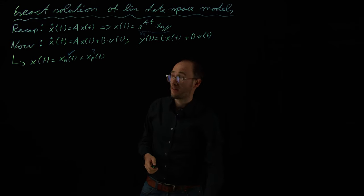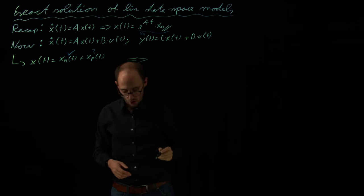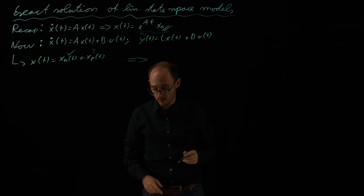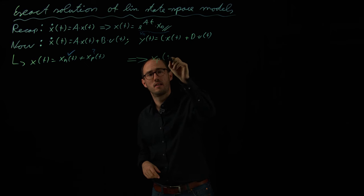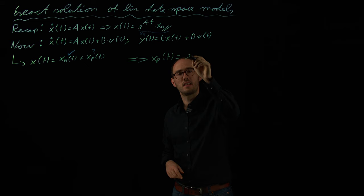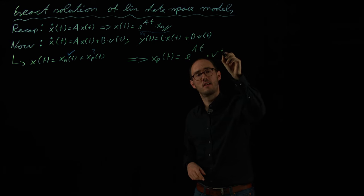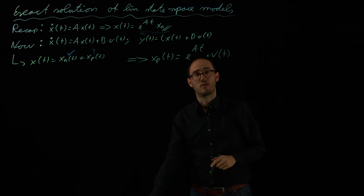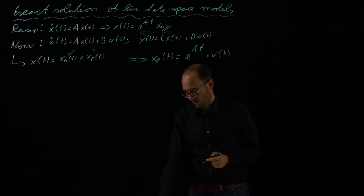In order to find that, we will use a classical approach: the variation of parameters, also known as the variation of constants approach. This states that x_p(t) is identical to e^(At) — the matrix exponential which we already know — times v(t), an unknown function v(t) which we are going to calculate in the subsequent equations.